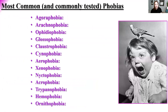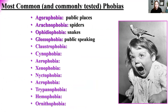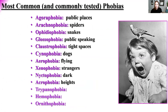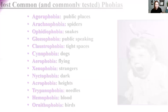Commonly tested phobia names: agoraphobia (public places), arachnophobia (spiders), ophidiophobia (snakes), glossophobia (public speaking), claustrophobia (tight spaces), cynophobia (dogs), aerophobia (flying), xenophobia (strangers), nyctophobia (dark), acrophobia (heights), trypanophobia (needles), hemophobia (blood), and ornithophobia (birds).